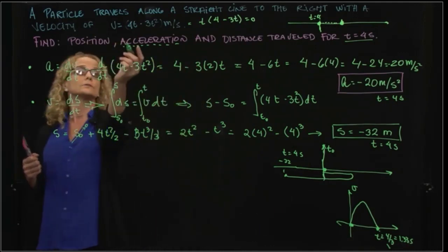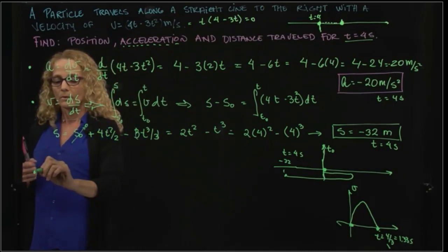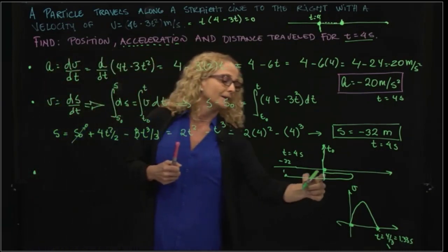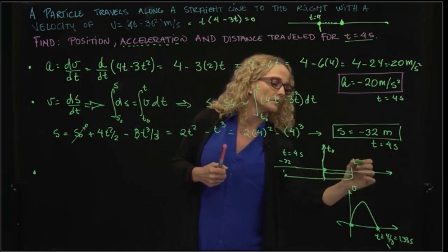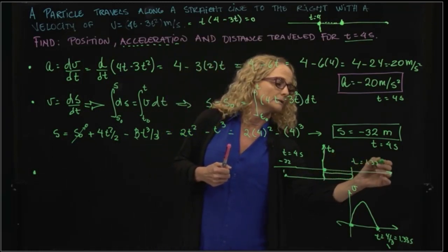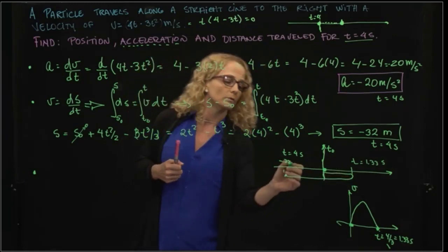So that leads us to our final question, which is distance traveled. We know that we went some distance in the positive direction for t = 1.33 seconds, and then we went back that same distance, and we went all the way to 32 meters.